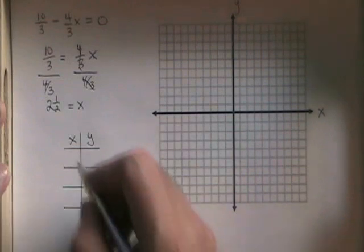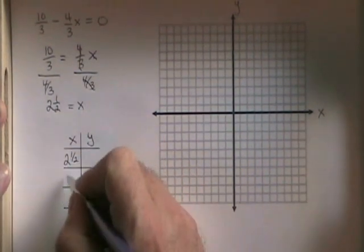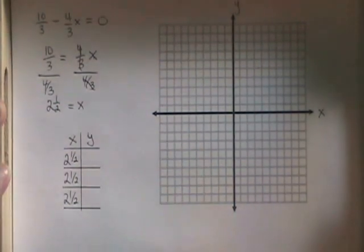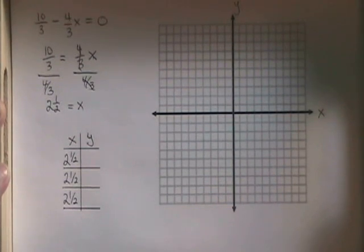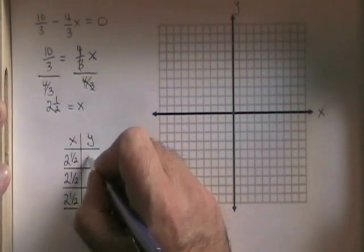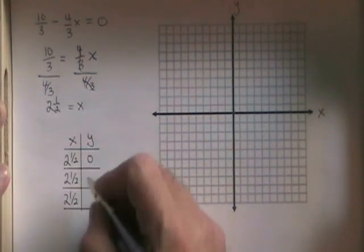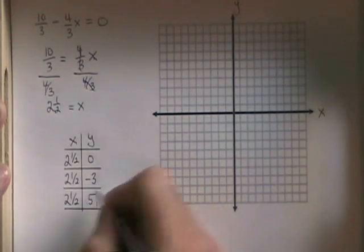If x is equal to 2 and a half, then in the table I show that x is always equal to 2 and a half, no matter what y is equal to. For y, I put any numbers I want, but I make sure 0, which represents an intercept, is one of them. I'm going to choose y equals negative 3 and y equals 5.